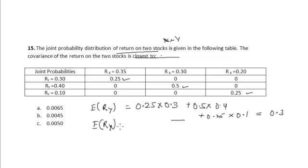Now similarly, the expected value of return on stock X is equal to 0.25 times 0.35 plus 0.5 times 0.3 plus 0.25 times 0.2, which will give me a value of 0.2875.